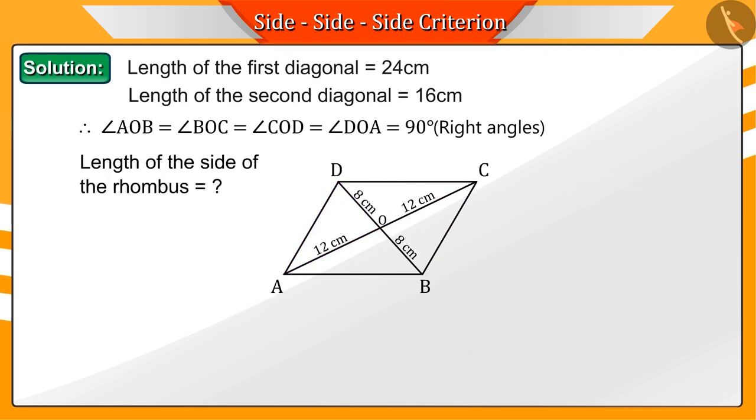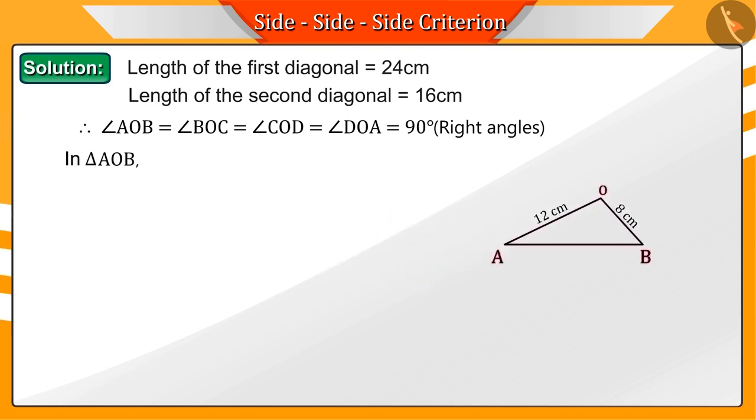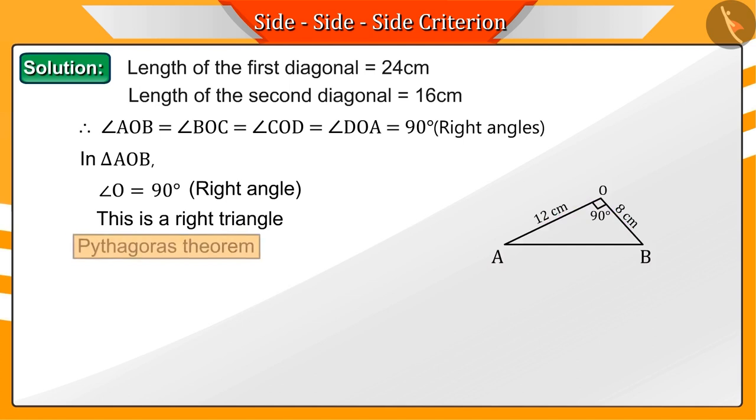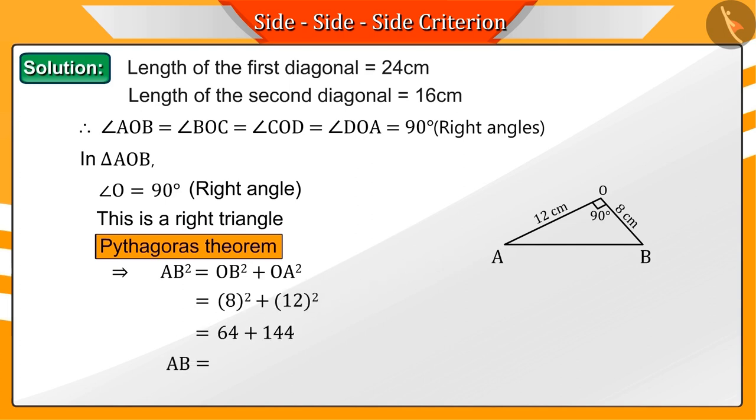Since we need to find the sides of this rhombus, if we take any one triangle, we can find the length of the sides. Let's discuss triangle AOB. In triangle AOB, we see that angle O is 90 degrees. Hence, we can say that this triangle is a right-angled triangle. Therefore, using the Pythagorean theorem in this triangle, the length of the side AB is found to be 14.42 cm.